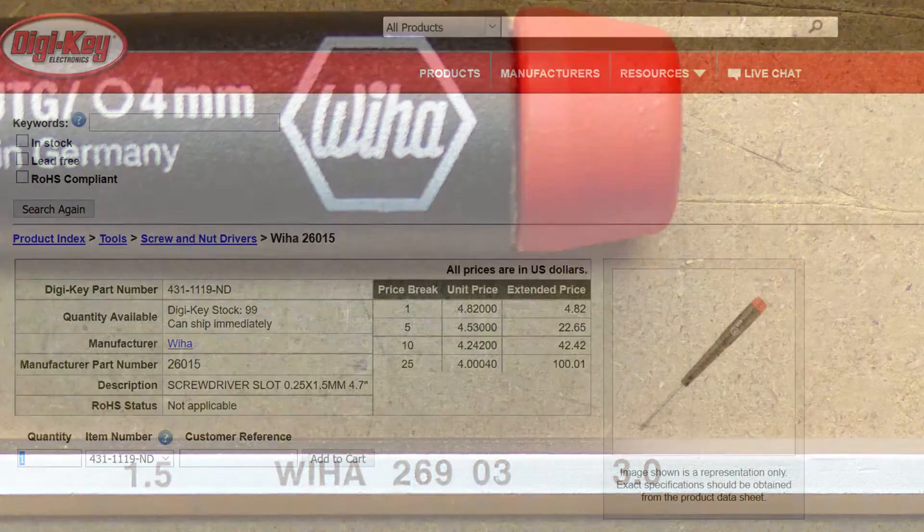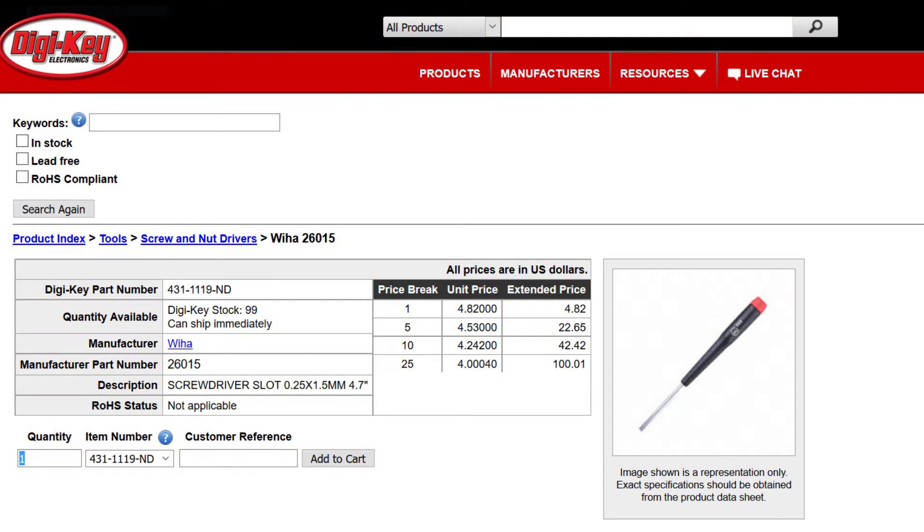The SKU for that is 26015 from WIHA, W-I-H-A. You can also get a whole set, which I would actually recommend if you have the money. You should have a set of precision screwdrivers if you're going to get into electronics. You also might need possibly some magnifying glass or reading glasses if you're a little bit older, you know, if you were born in the 70s as I was.